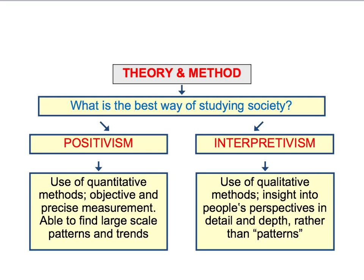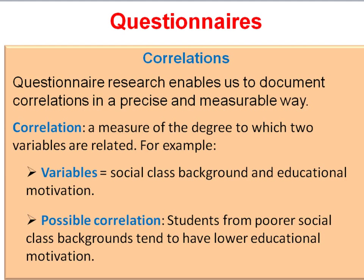All we have to do to produce quantitative data is simply count up the number or percentage of people who've ticked a particular box. Questionnaires allow you to collect a large amount of reliable data in quantifiable form from a very wide variety of people, and this is therefore a method that fits much more with a positivist approach to research rather than an interpretivist approach — interpretivism makes use of qualitative research methods rather than quantitative data. Because questionnaires collect quantitative data from large numbers of people, we can use them to document correlations in a precise and measurable way.